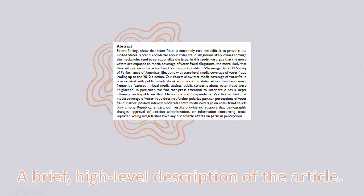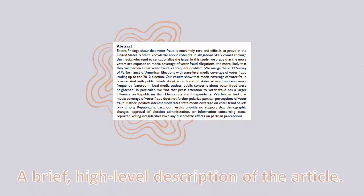First, read the abstract. This brief high-level summary of the article usually contains information about the author's research question, how they did their research, and what they found. The abstract will help you determine if this article relates to your topic or research question.